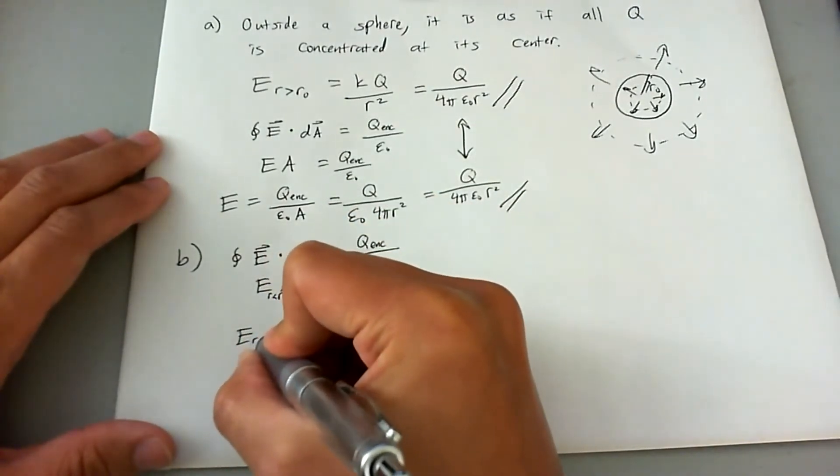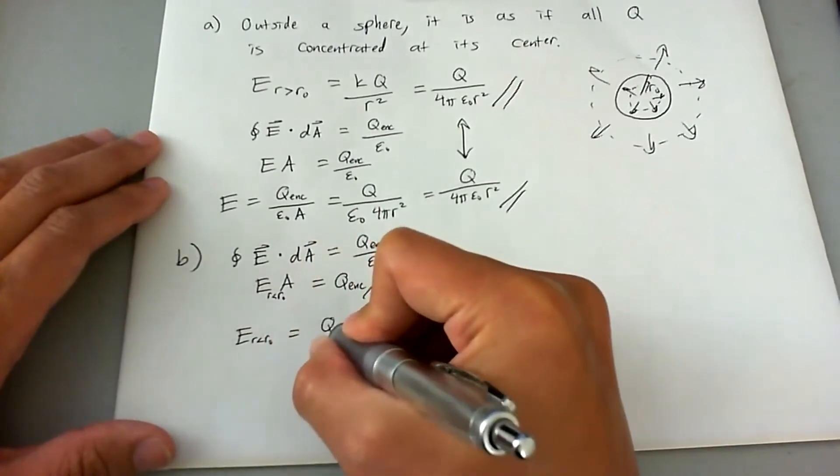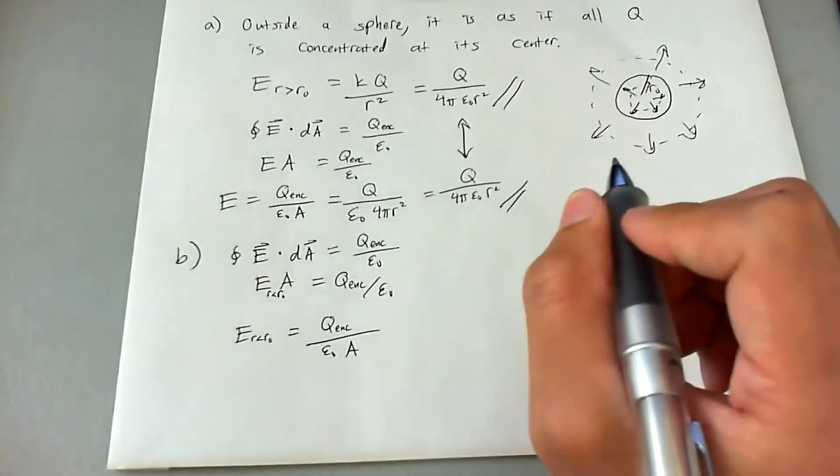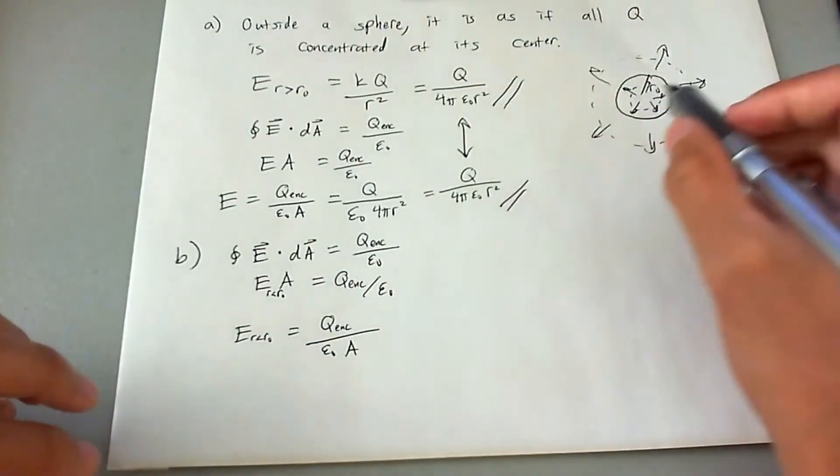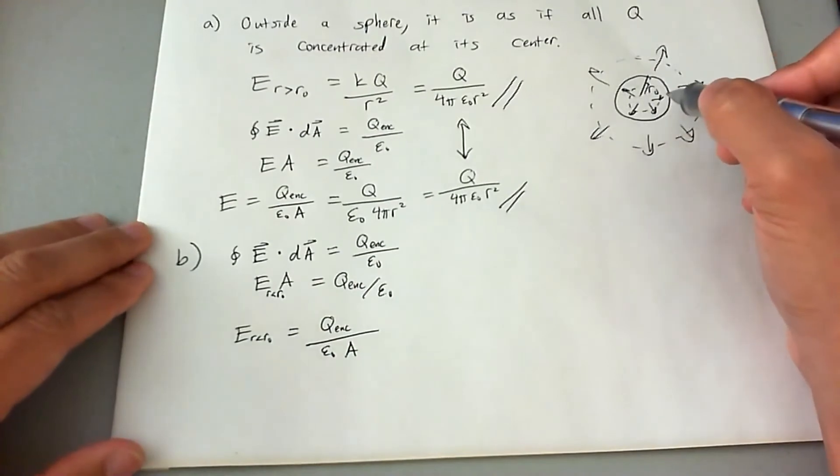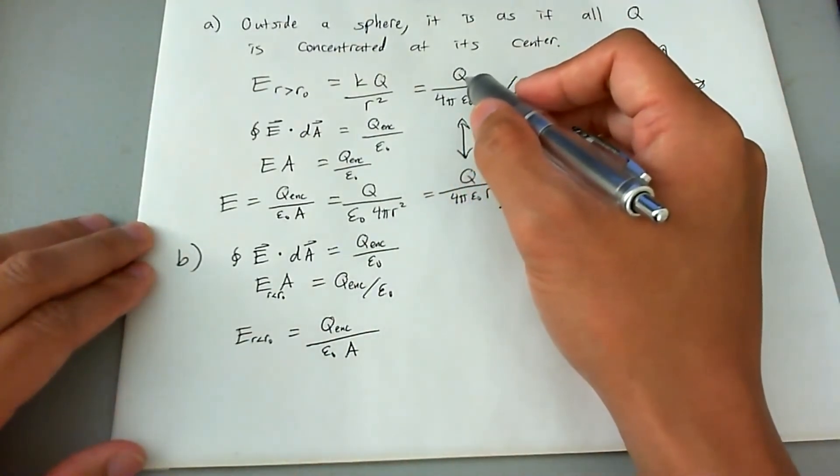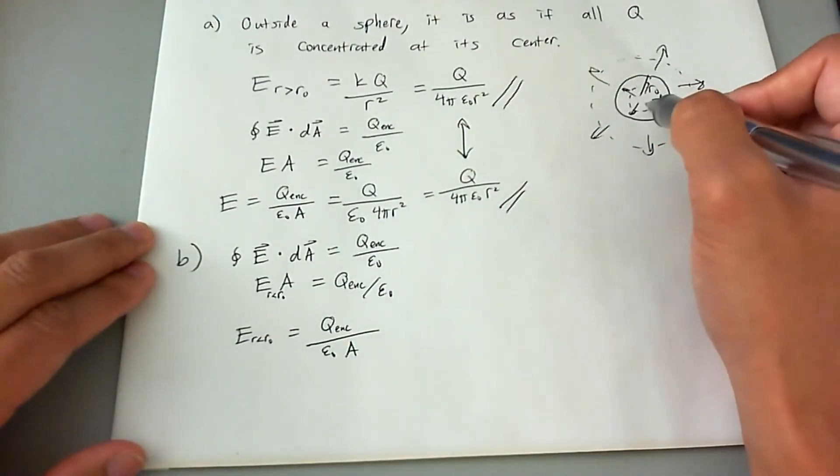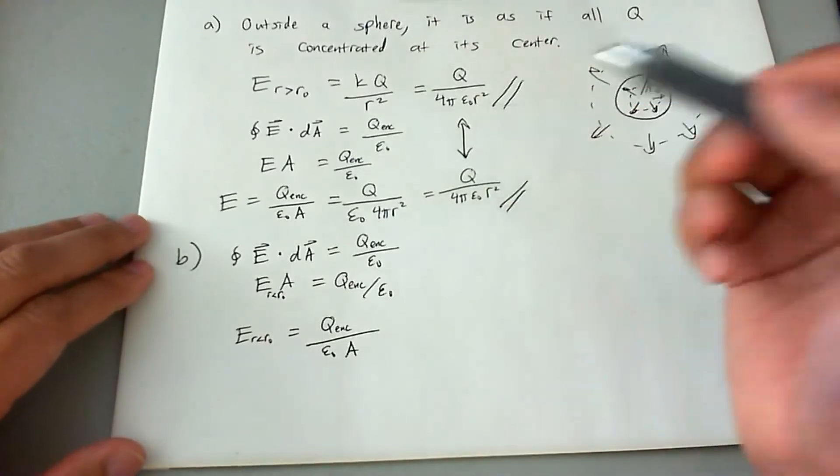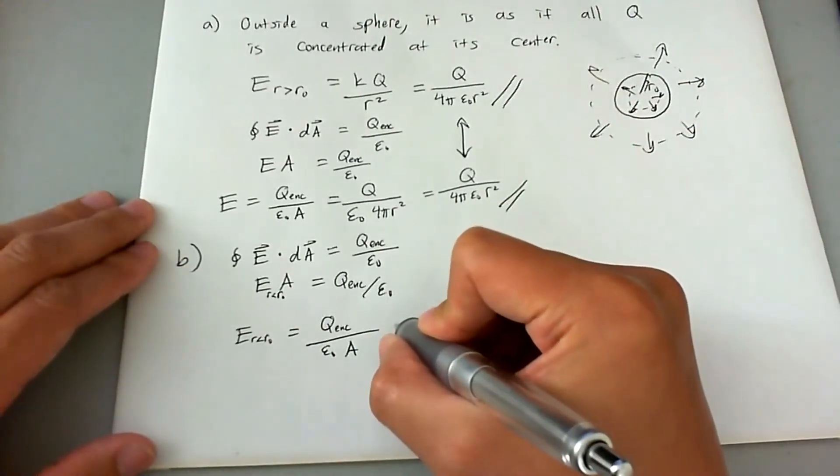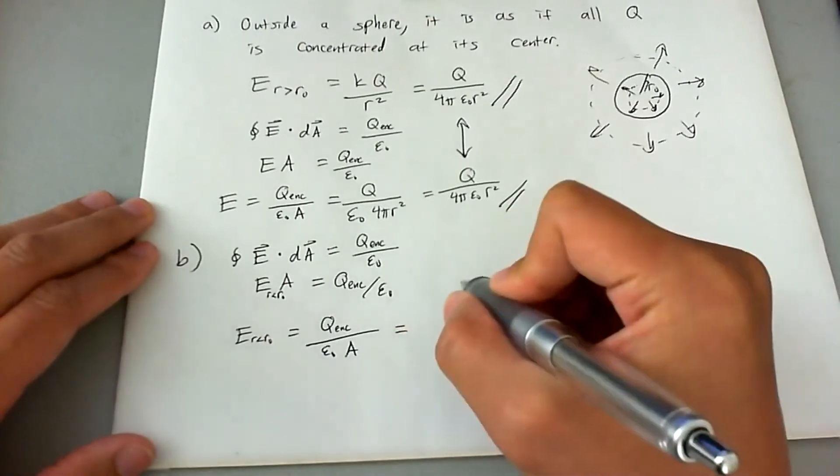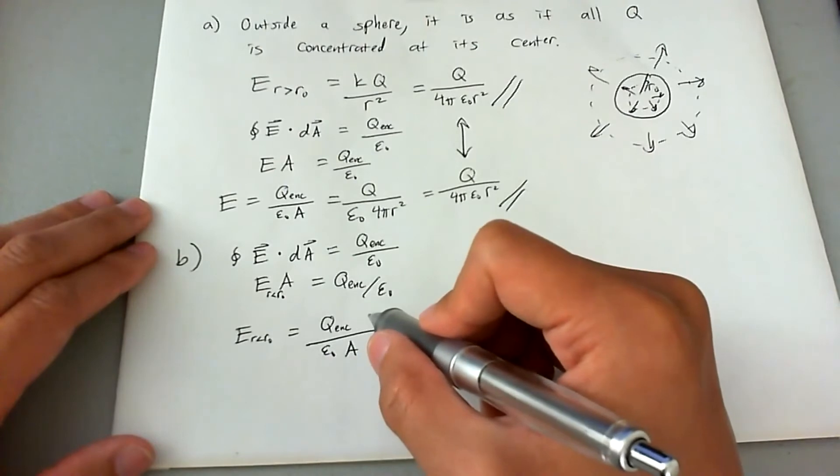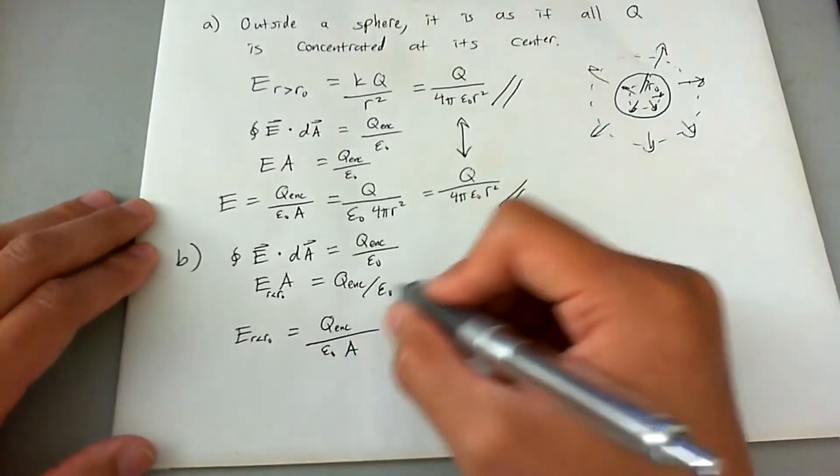So the E of R less than R naught is going to equal Q enclosed divided by epsilon naught times A. Now the problem here, the Q enclosed is not going to be the total Q. So you can't just say Q, because that's what's given in the problem. That's the entire Q of the sphere. But we're only looking at a fraction of the Q. So what we're going to do is invoke a placeholder variable that is related to Q using the equation for charge density.